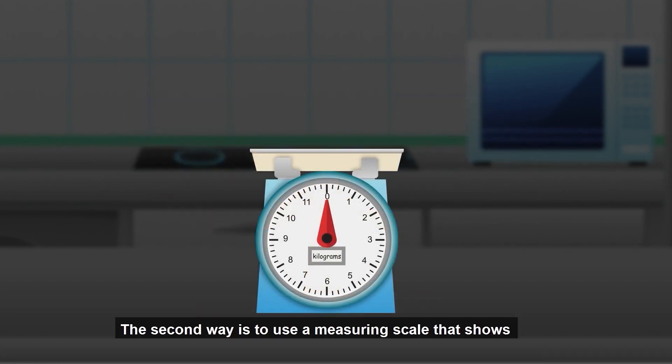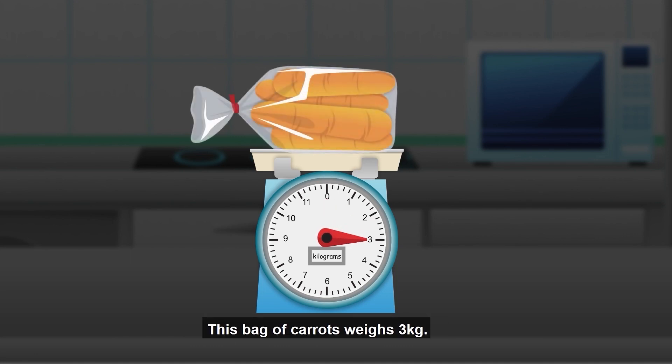The second way is to use a measuring scale that shows us the exact weight of the item on it. This bag of carrots weighs 3 kilograms.